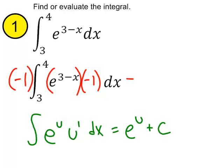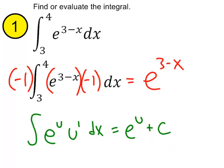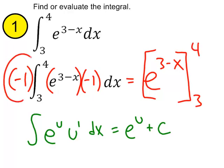If we put a negative 1 there, we've got to put one on the outside too. When I anti-derive, the u-prime term goes away during the integration process. So we'll get e to the 3 minus x. Since this is a definite integral, we won't bother with the plus c. Instead, we'll evaluate at the endpoints of the integral, 3 and 4. Of course, we're not going to forget this negative 1.